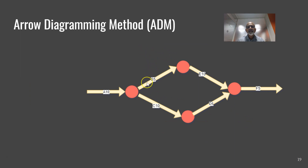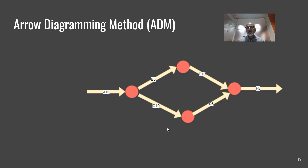This is the Arrow Diagramming Method. In the previous method, activities were at the nodes connected by arrows — that is PDM. Here in the Arrow Diagramming Method, activities are on the arrows and connected at the nodes. This is known as ADM or Activity on Arrow — AOA. The purpose of both PDM and AOA is the same: these are network diagrams and the objective is to prepare the schedule.